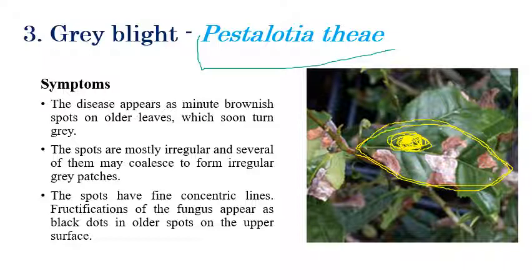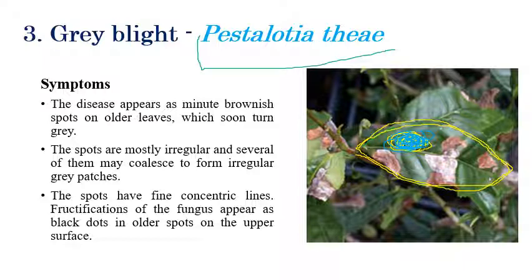Initially the small spots coalesce, and in later stages the small spots can turn into very large spots. Black dots can also be seen on both surfaces of the leaves, and concentric lines can also be observed. The key symptom progression is: small brown spots appear, which later turn into gray color spots.